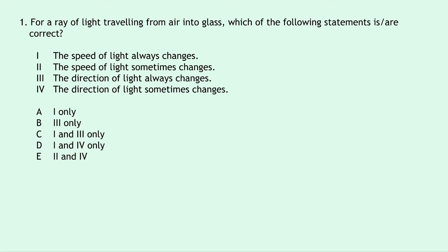Statement 1 — the speed of light always changes — is true. Remember, light will always change speed when it goes from one material to another. So statement 2, the speed of light sometimes changes, cannot be true if number 1 is true. Statement 3, the direction of light always changes, is not true because we cannot define refraction as a change in direction since it doesn't always change direction. That means number 4, the direction of light sometimes changes, is true. So only 1 and 4 are correct, which is answer D.